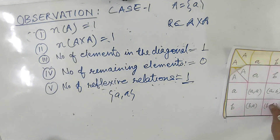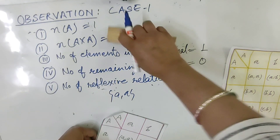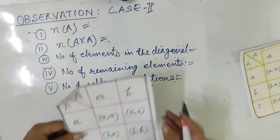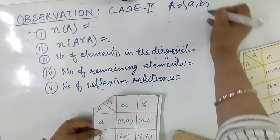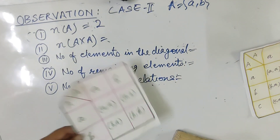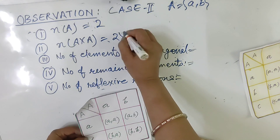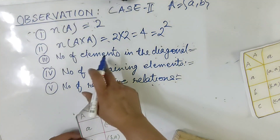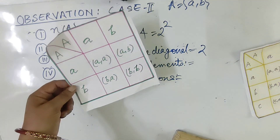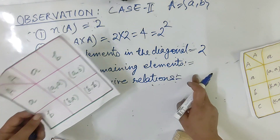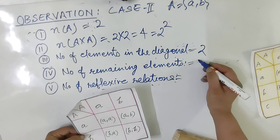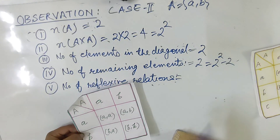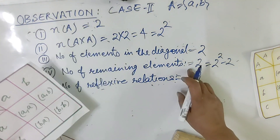Now I am going to move to case 2. Case 2: the number of elements in set A is 2, elements are A and B. How many total elements are there? 2×2 = 4, or 2 squared. Number of elements in the diagonal are 2 — this one and this one. Number of remaining elements: total elements minus diagonal elements = 2 squared minus 2 = 2. So remaining elements are 2.